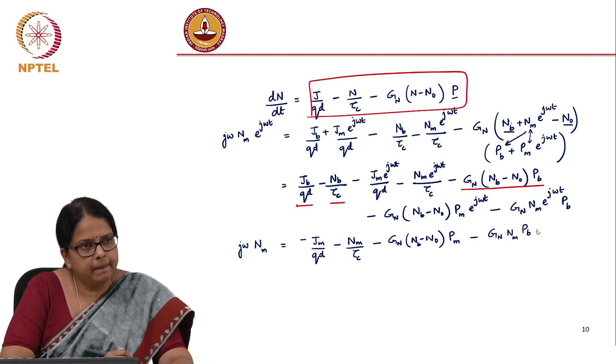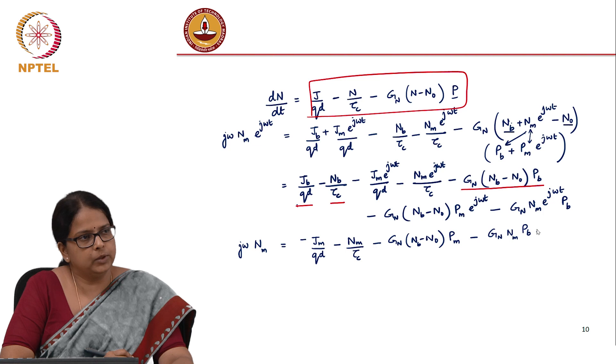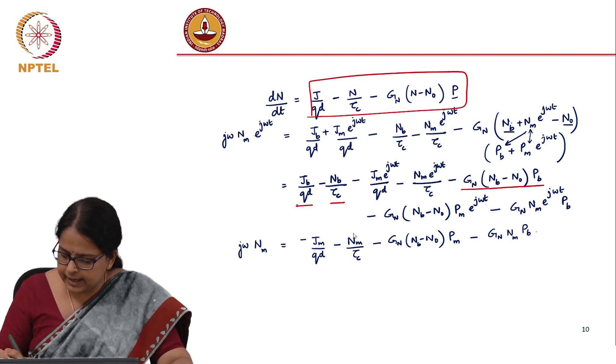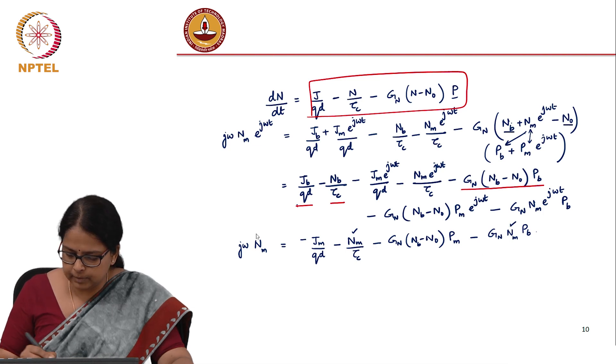We are interested to find p_m at omega divided by p_m at zero. But what are the unknowns here? I have this n_m.